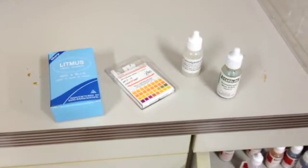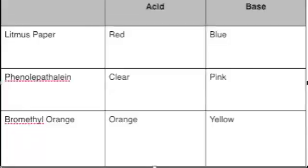In your Erlenmeyer flask, insert the known solution along with two to three drops of indicator, which will show the endpoint. There are many types of indicators. This table will show you what you will see. pH paper is the most accurate, but since it must be added to the solution, phenolphthalein is the most common.